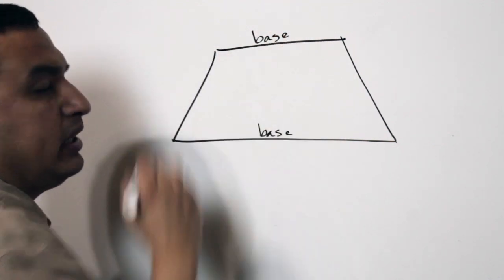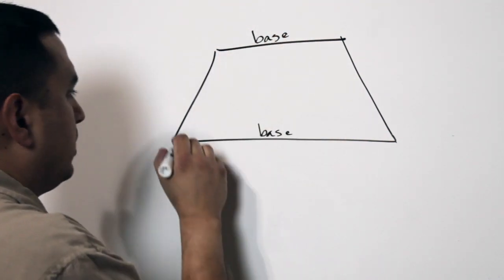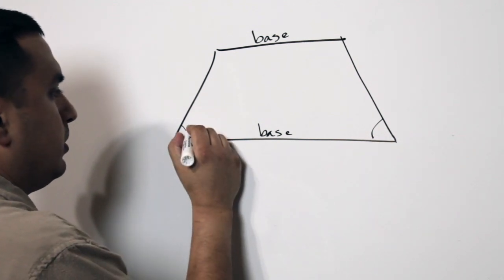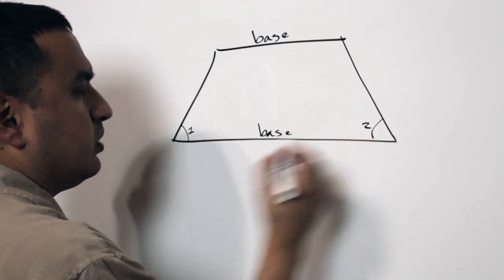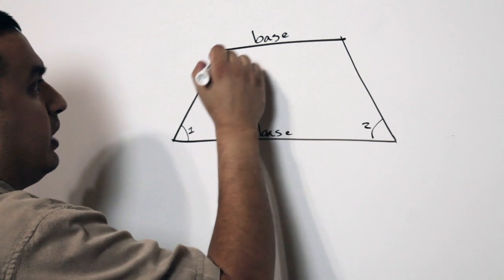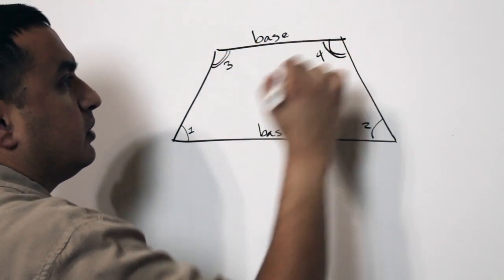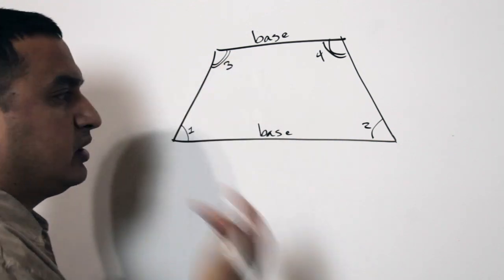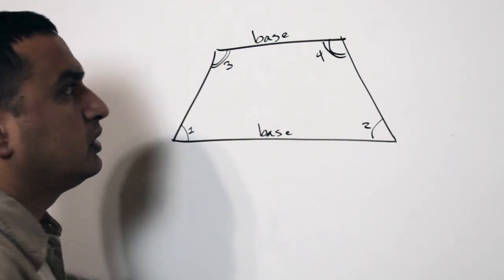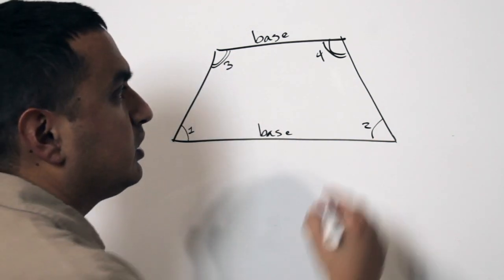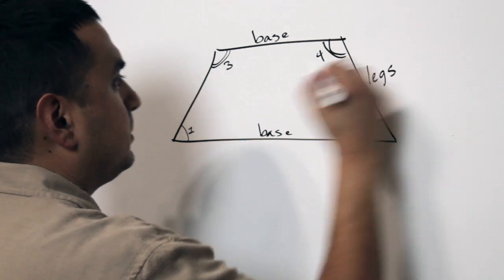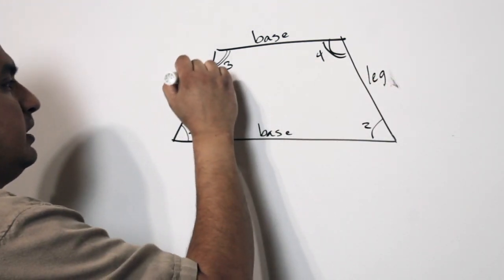Now, because we have two bases, we have two pairs of base angles. So we have this pair here, we call this angle 1, and this one would be angle 2. And we would have another pair 3, and angle 4. And that would be another pair of base angles. Now, the non-parallel sides, we're going to call those legs. This would be a leg, and this would be a leg.